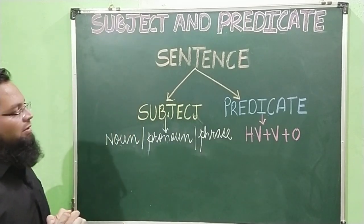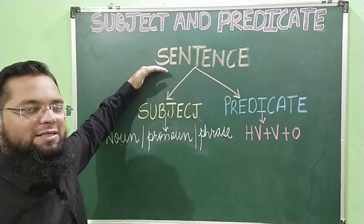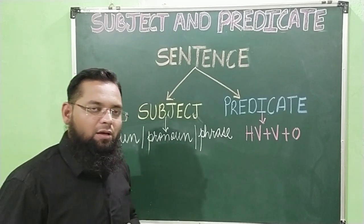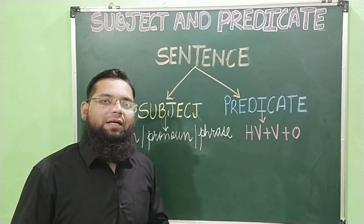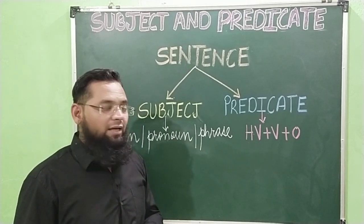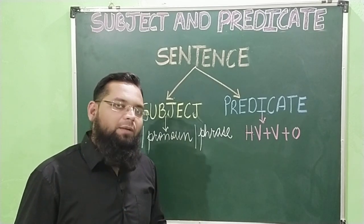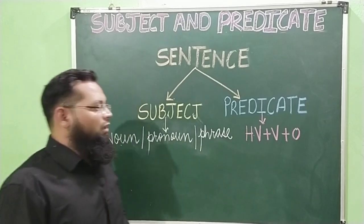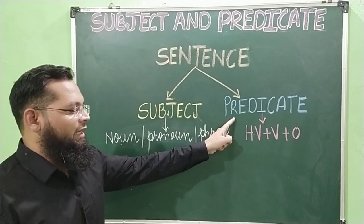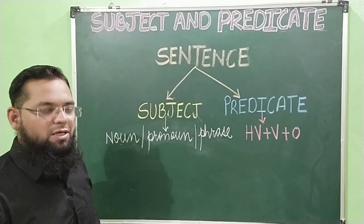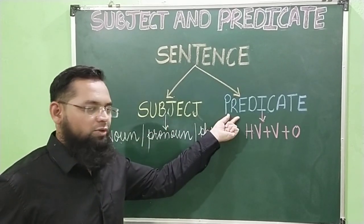Now let's start with a discussion. What do you mean by a sentence? A sentence is a group of words that has complete sense. A sentence has two parts: subject and predicate. Sentence के दो parts होते हैं — एक subject होता है और एक predicate होता है.